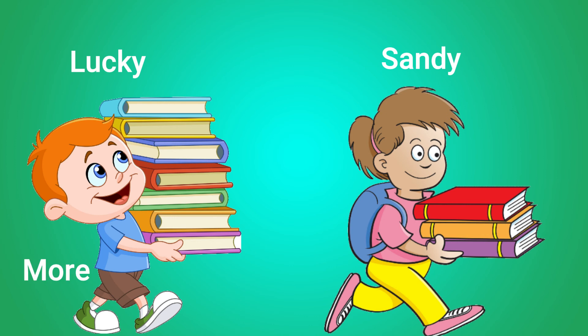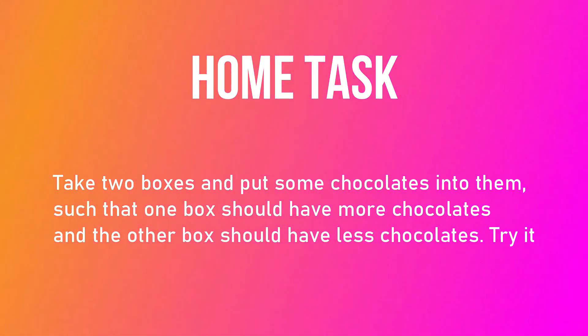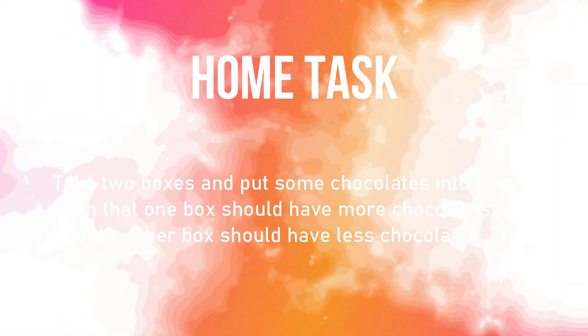Lucky is carrying more books and Sandy is carrying less books. Hope now you have understood the concept of more and less. Here is a small task for you — take two boxes and put some chocolates into them such that one box should have more chocolates and the other box should have less chocolates. Come on, children, try it!